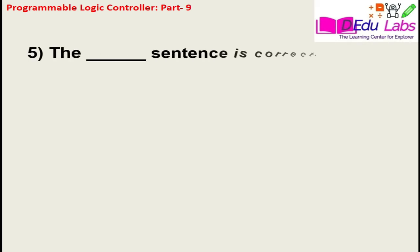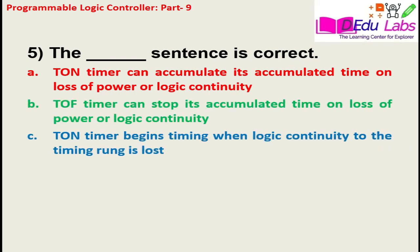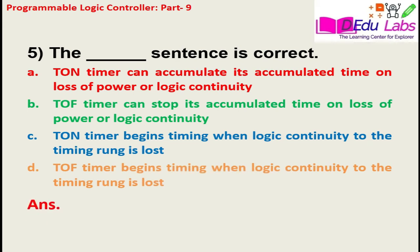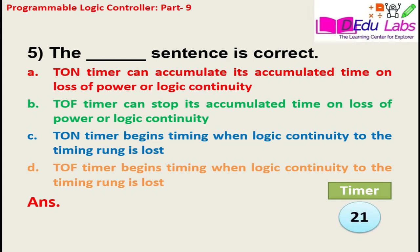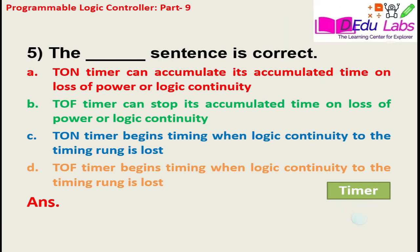Question number five: which blank sentence is correct? Option A: TON timer can accumulate time on loss of power or logic continuity. Option B: TOFF timer can stop its accumulated time on loss of power or logic continuity. Option C: RTON timer can stop its accumulated time on loss of power. Option D: TOFF timer begins timing when the logic continuity to the timing rung is lost. The answer is option D — TOFF timer begins timing when the logic continuity to the timing rung is lost.